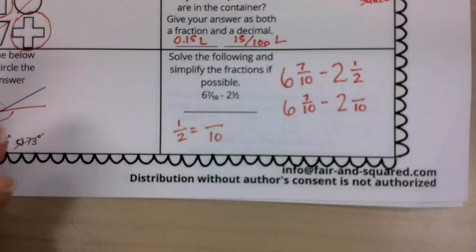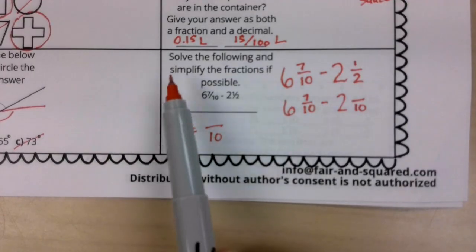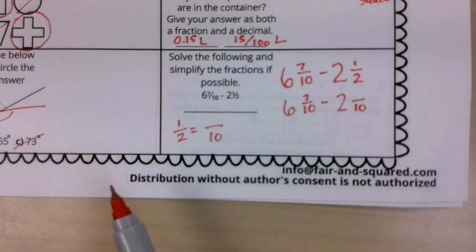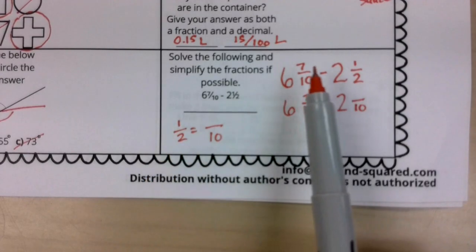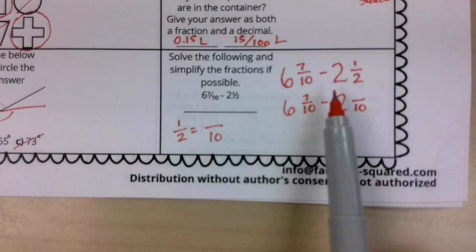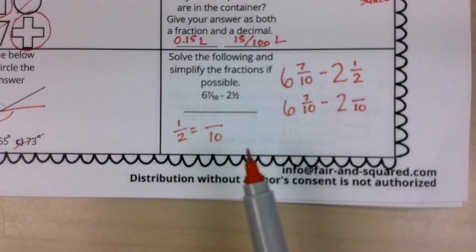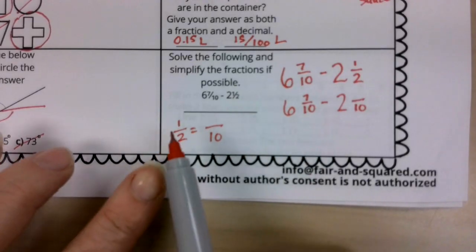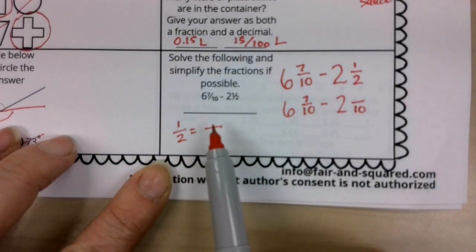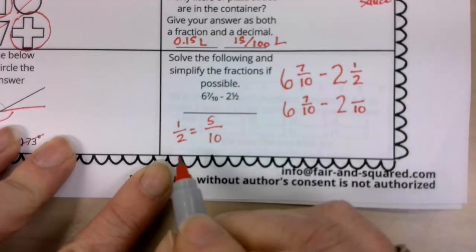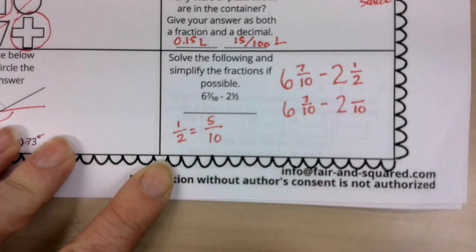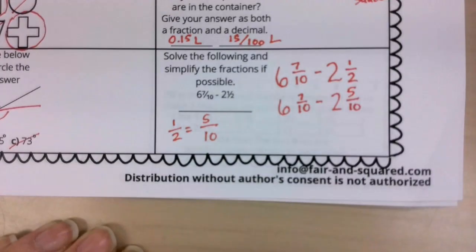One last question, and again, it's fractions. Lots of fractions today. Solve the following and simplify the fractions if possible. Notice I just rewrote it here. What we do when we have a problem like this, and we notice that we don't have common denominators, we zero in on the denominators. I have 10 and 2. Which of those are we going to go with as our common denominator? We're going to go with 10. So my first job is to find out what is one-half in an equivalent form with a denominator of 10? Well, that's going to be 5 tenths, because 2 times 5 equals 10. 1 times 5 equals 5. So notice, boys and girls, that's your first step.